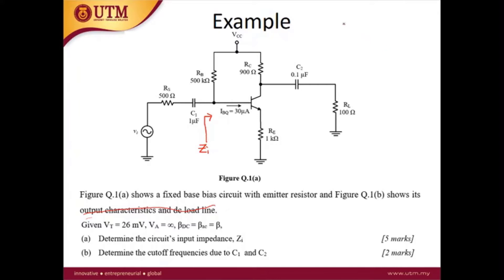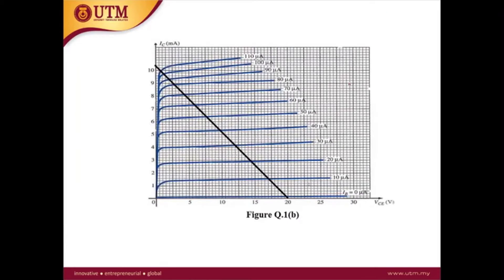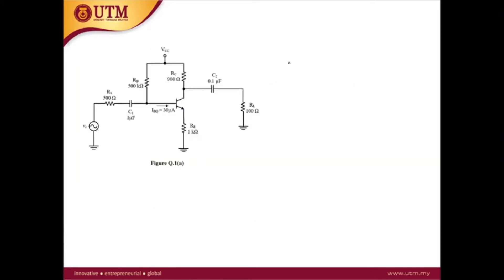For the mid-band equivalent circuit, we need to find Rpi, where Rpi equals beta over Gm. Gm equals IC over 26 mV. In this question, IC is not directly given, so we need to calculate IC. Beta is also not given, so we need to calculate beta. Once we have IC, we can get Gm, and once we have beta, we can get Rpi.